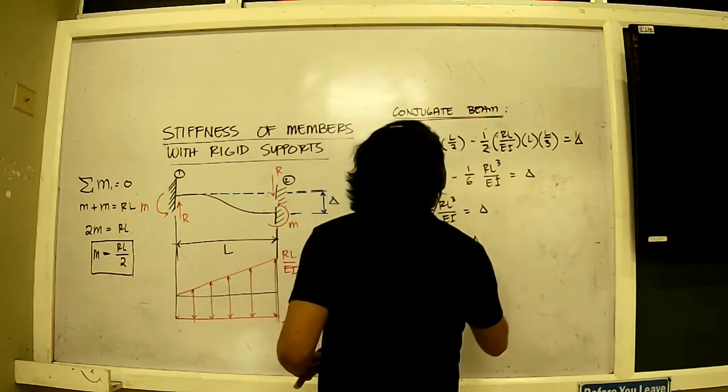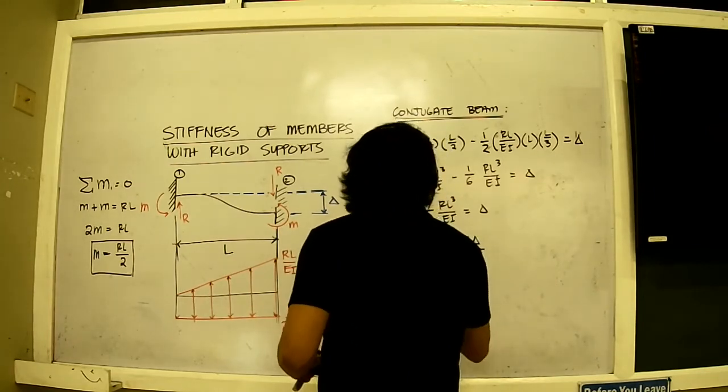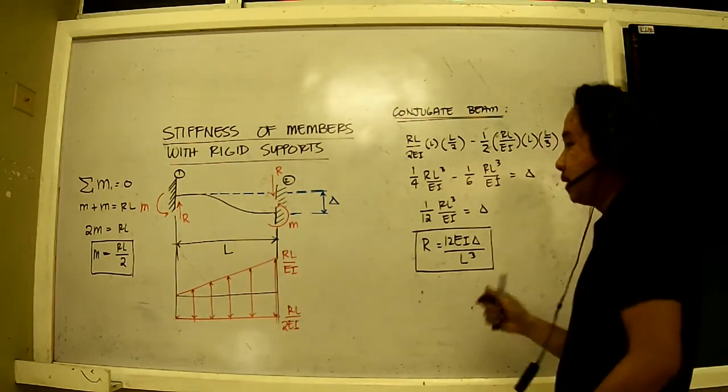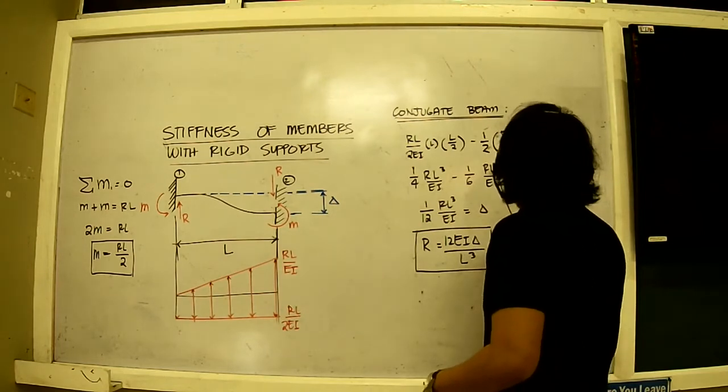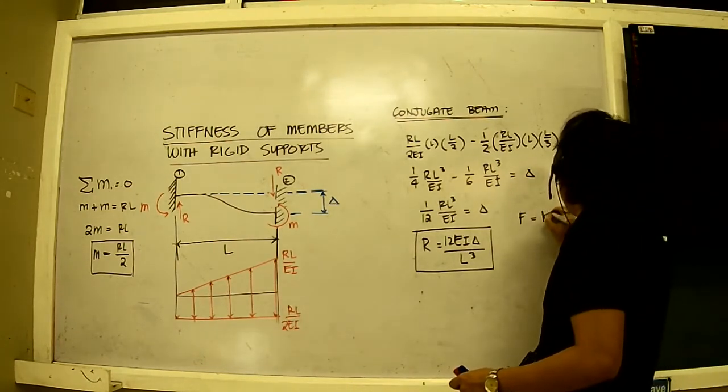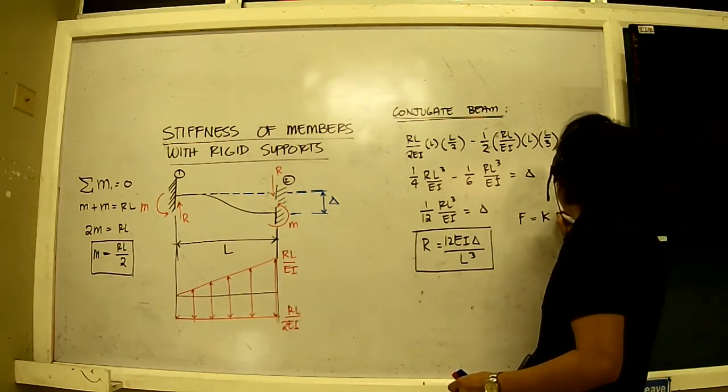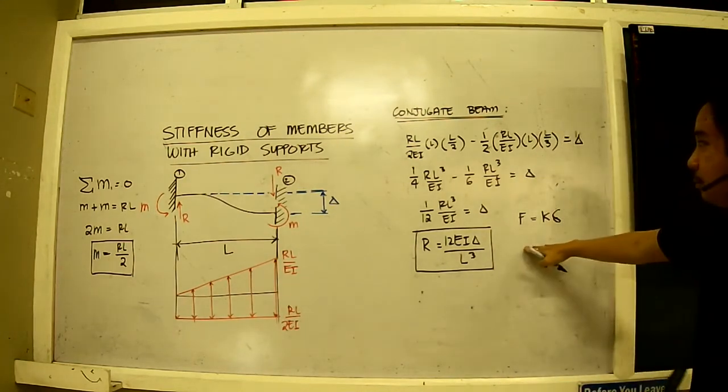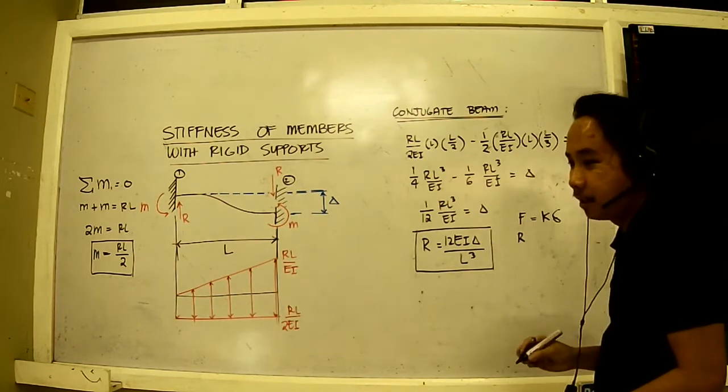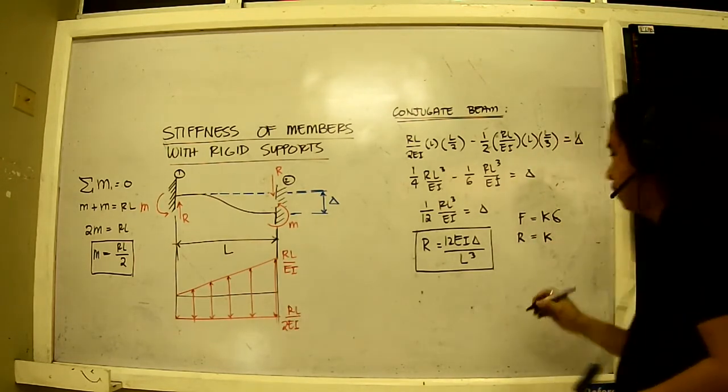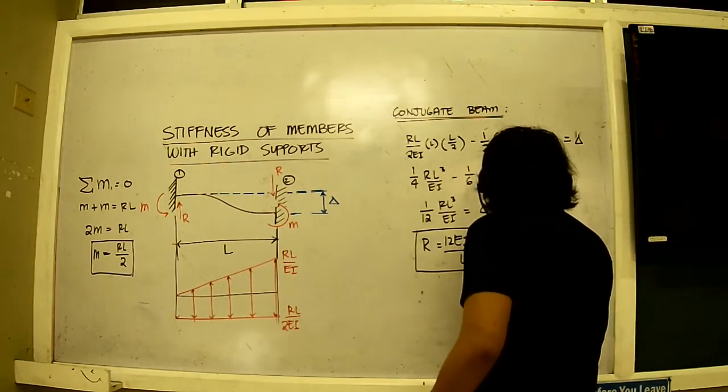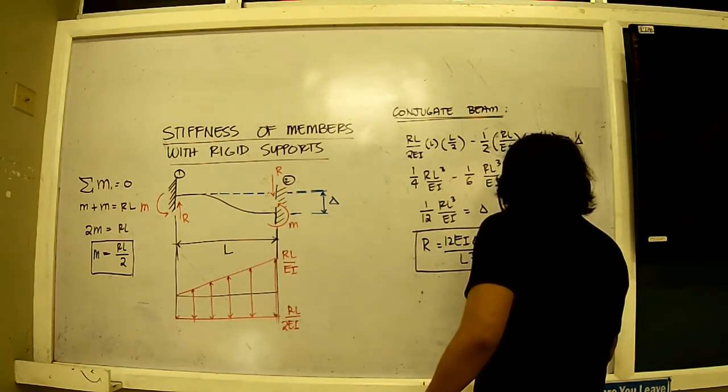Now this is just one step. The second step here is to actually invoke the fundamental definition of force, stiffness, and displacement. Force is equal to stiffness times displacement. In this case, F is equal to R, and K is something that we need to find, and this is equal to delta. Now I substitute all these values here and I will have this is equal to K.